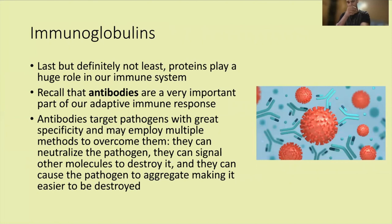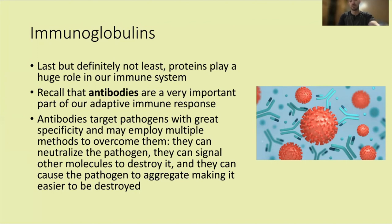The last type of protein we'll cover today are immunoglobulins, also known as antibodies. Antibodies are a very important part of our adaptive immune response. They target pathogens with great specificity and employ multiple methods: neutralizing pathogens, signaling other molecules to destroy the pathogen, and causing pathogens to aggregate, making it easier for other immune cells to destroy them.